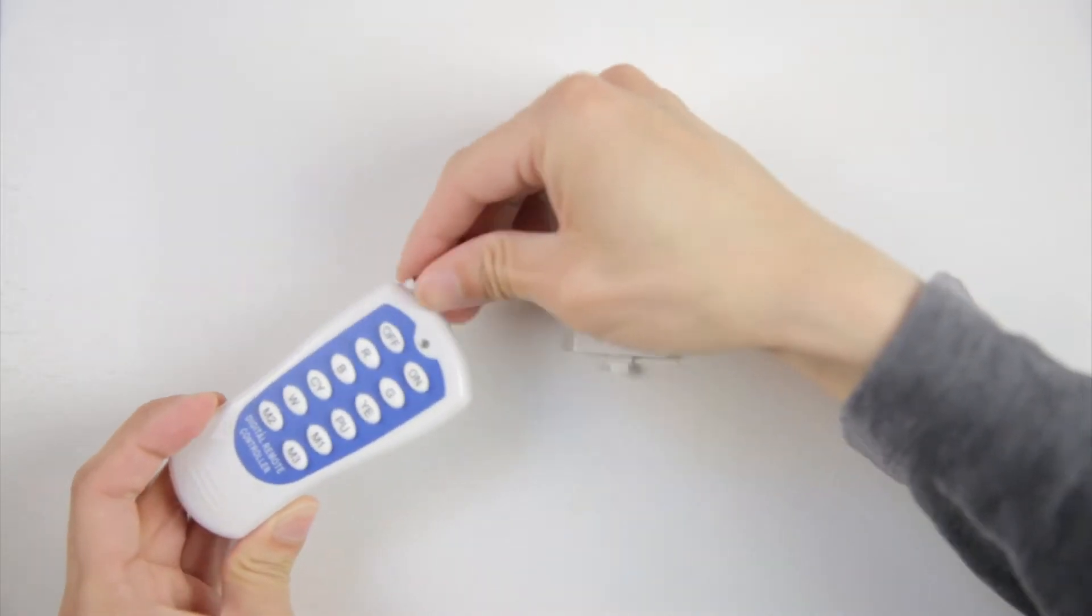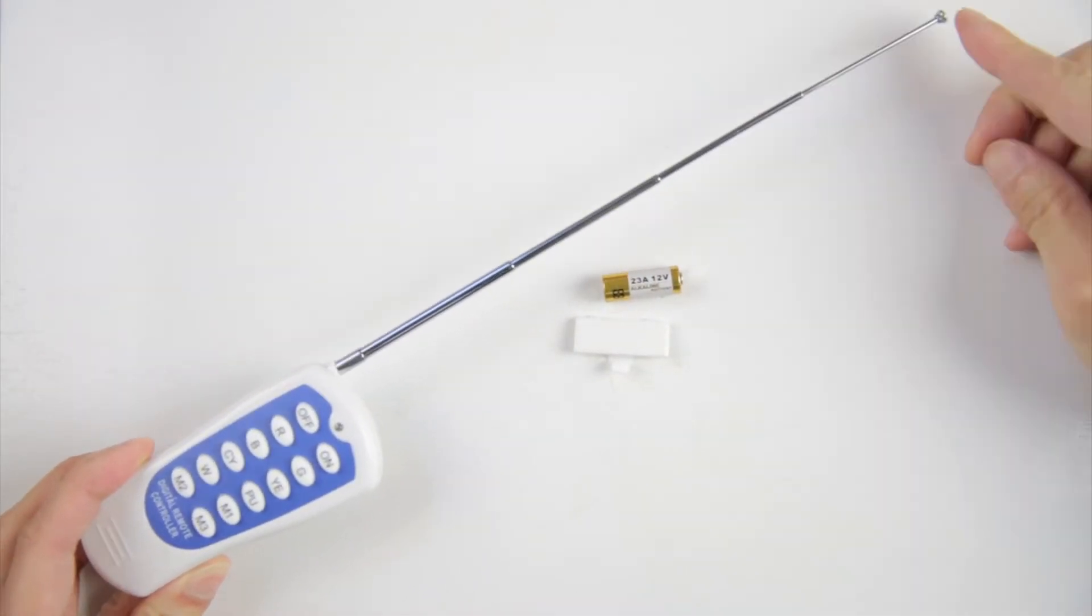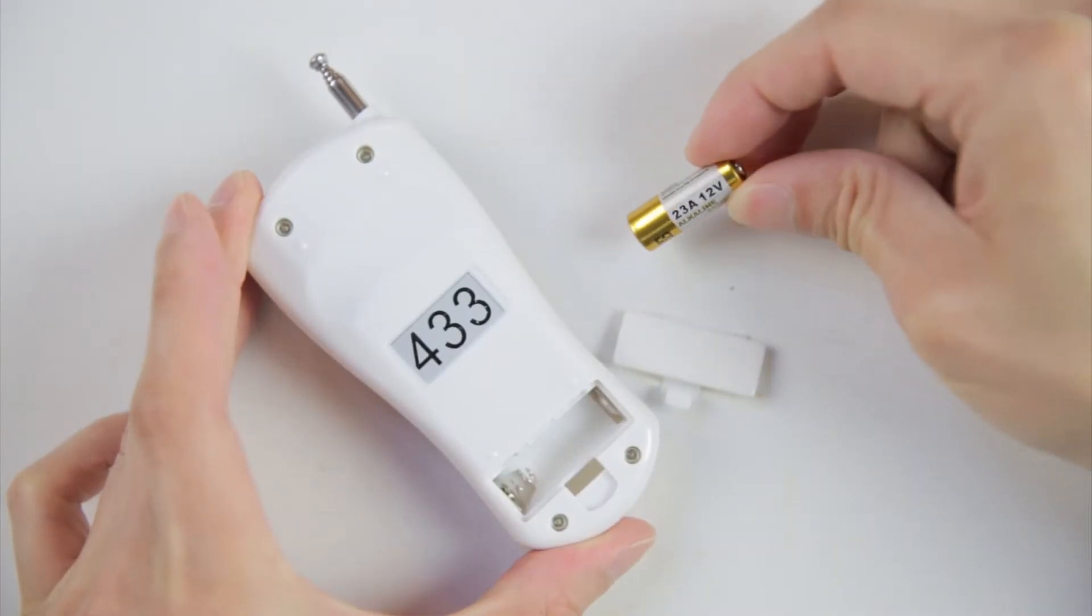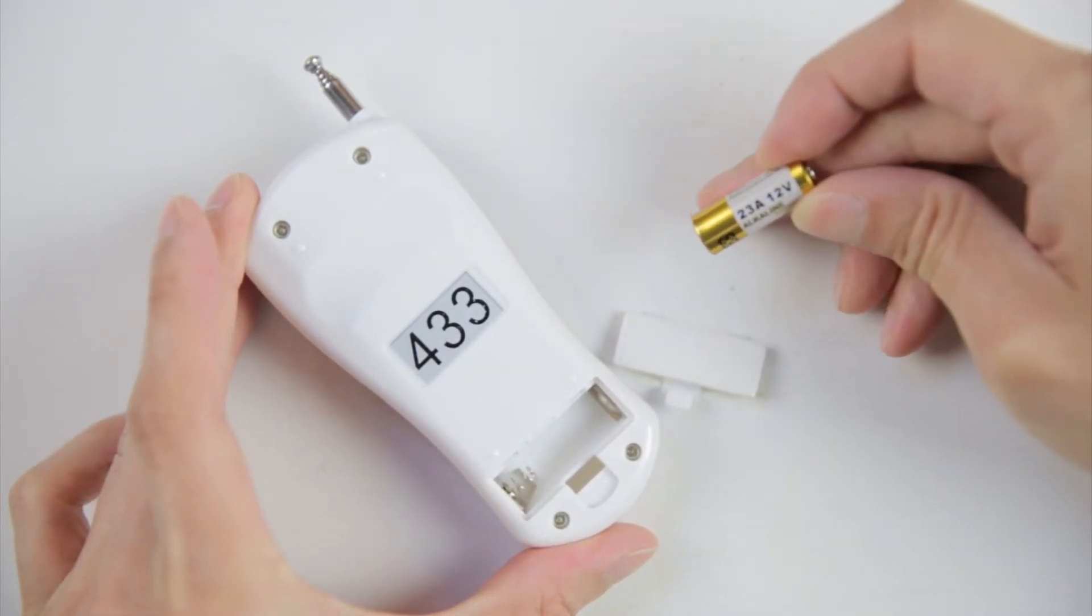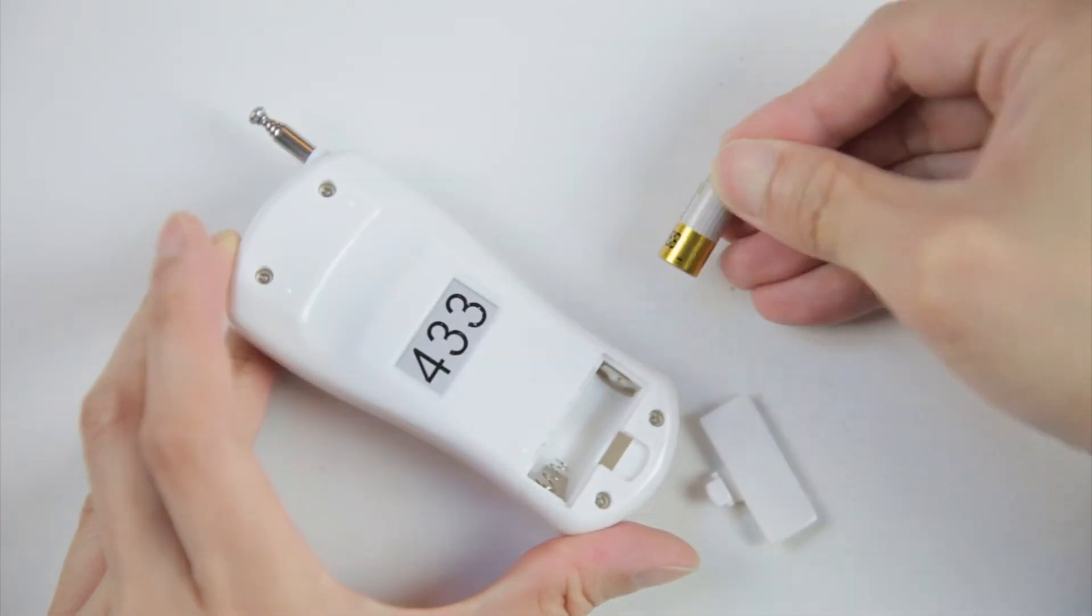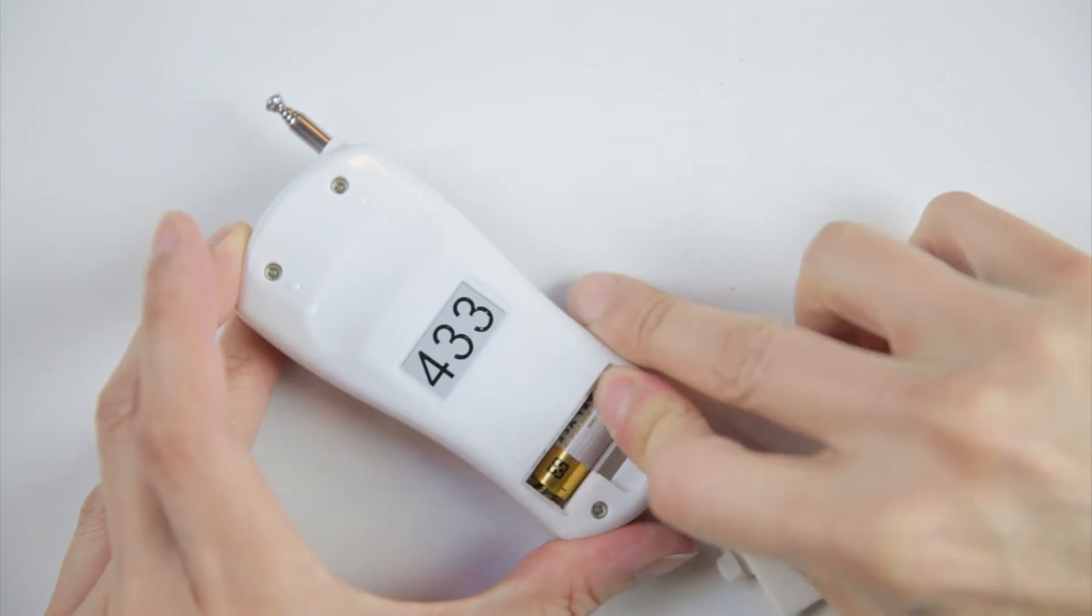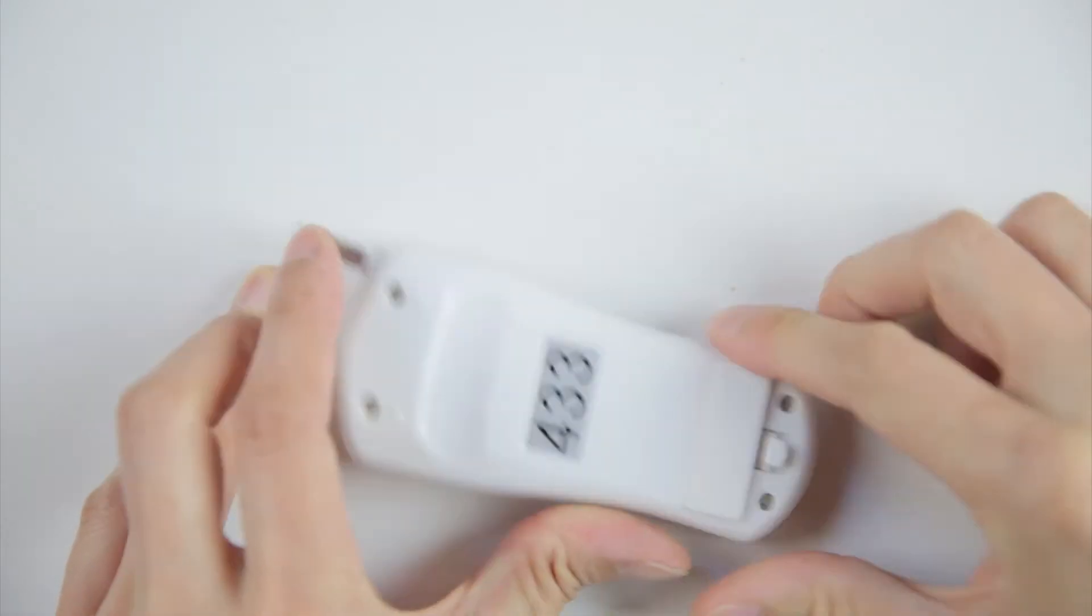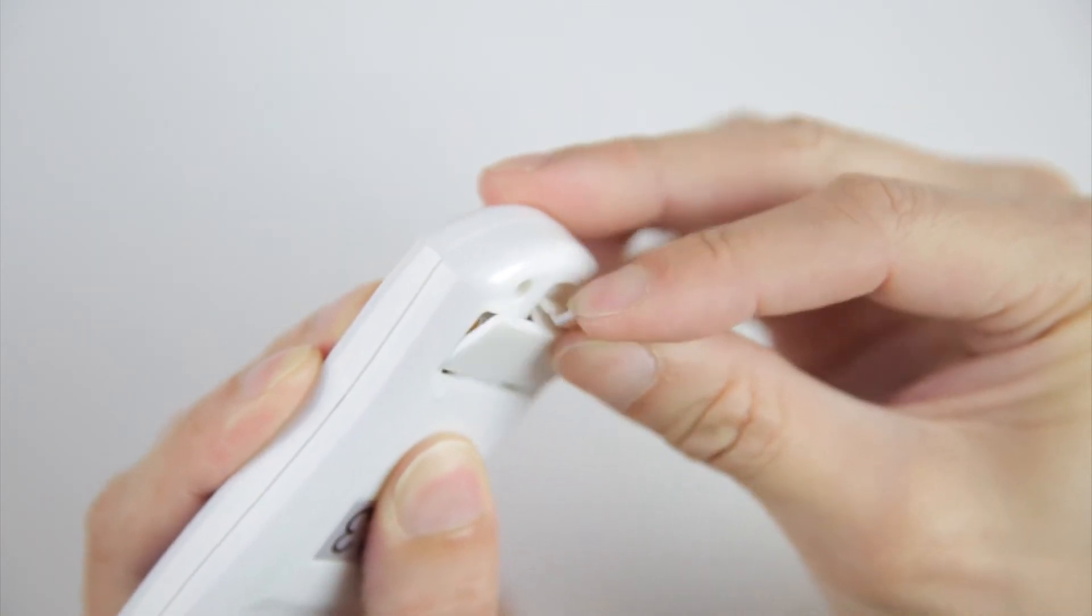Over here is the remote. I guess I can extend the antenna and this is about 10 inches long or so. These are 12 volt batteries which are a little bit harder to find. I would have preferred triple A's or maybe a single double A battery in the remote instead. But at least it comes with the battery. So let me put that in here. And you put the battery door closed. And guess what? The battery door is a little bit too big.